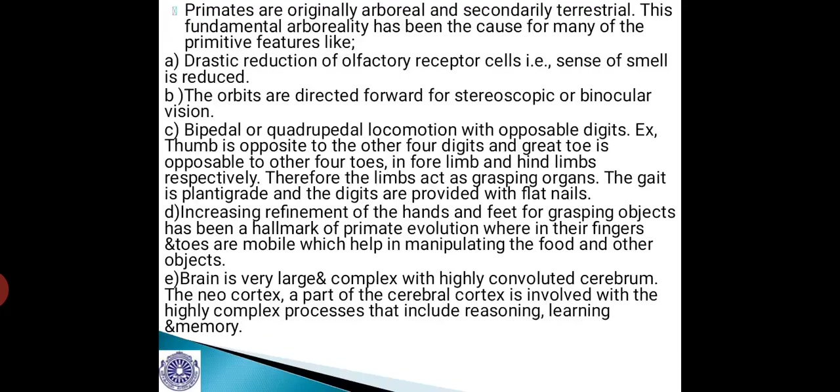The limbs act as grasping organs. The gait is plantigrade and the digits are provided with flat nails. Increasing refinement of the hands and feet for grasping objects has been a hallmark of primate evolution, wherein their fingers and toes are mobile to help in manipulating food and other objects. Their brain is very large and complex with highly convoluted cerebrum. The neocortex, a part of the cerebral cortex, is involved with highly complex processes like reasoning, learning and memory.